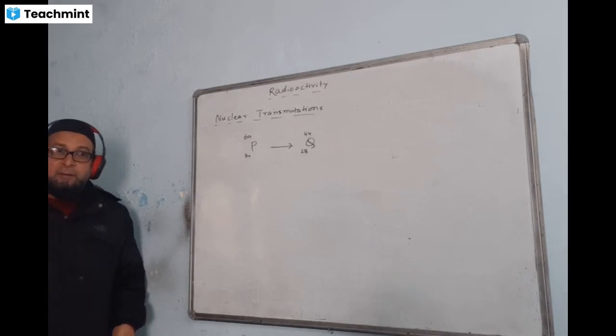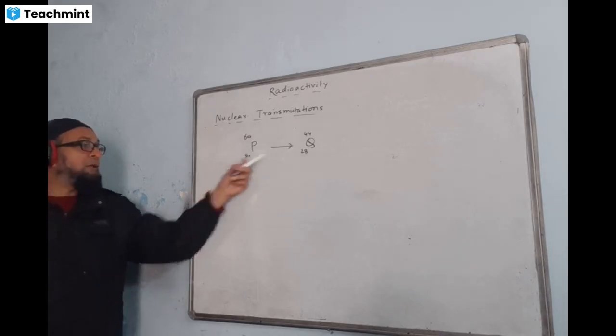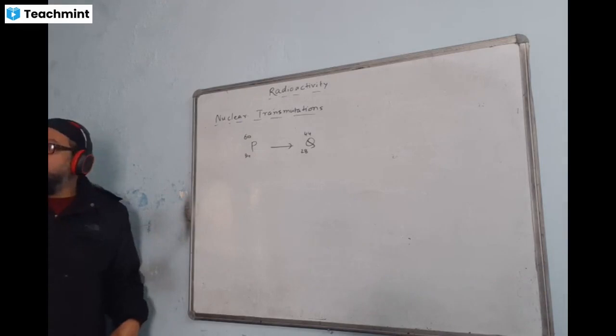Can you guess which particles are emitted and find their numbers? Both are changing, that means both change takes place only in case of alpha particle emission. Definitely alpha particles are being emitted.